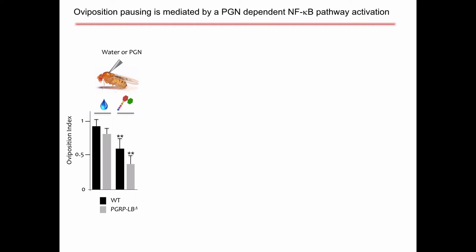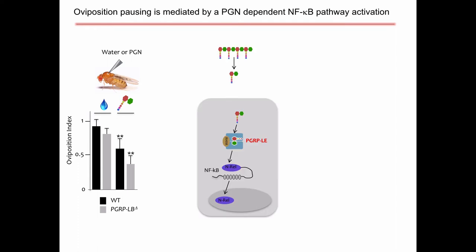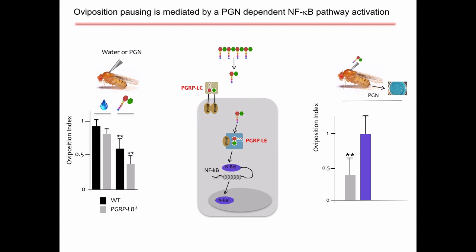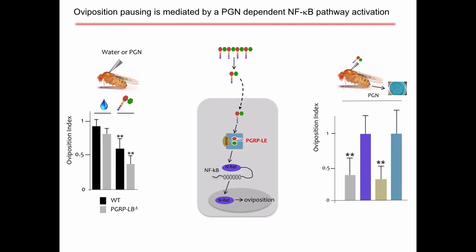The obvious question is whether this goes through the same NF-κB signaling pathway used for the immune response. We injected peptidoglycan into two different mutant backgrounds. Removing NF-κB abolished the egg-laying drop. Removing the membrane-associated receptor still allowed the drop. But removing the intracellular receptor abolished the drop. This tells us that intracellular peptidoglycan sensing in some cells triggers the egg-laying reduction.